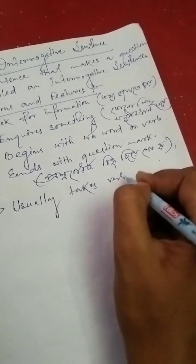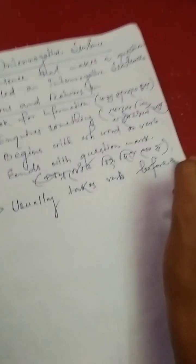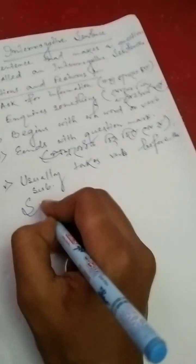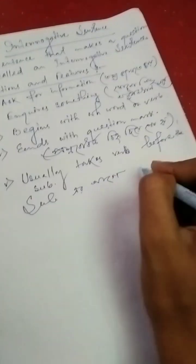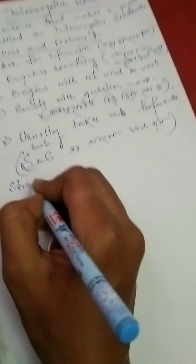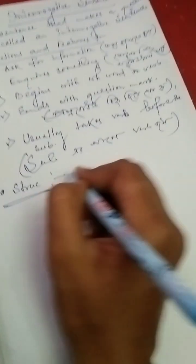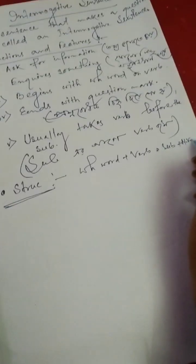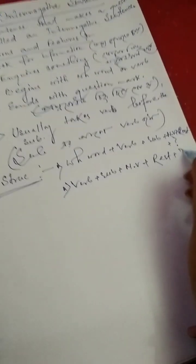Structure. The structure key is: WH-word plus verb plus subject plus main verb plus rest plus interrogation mark. Or: verb plus subject plus main verb plus rest plus interrogation mark.